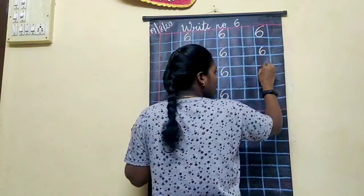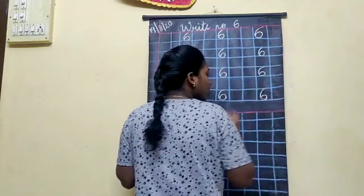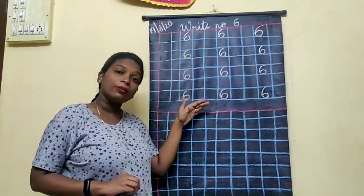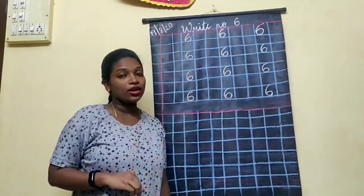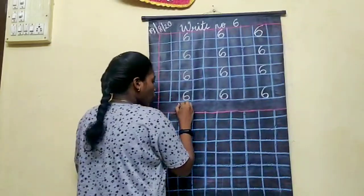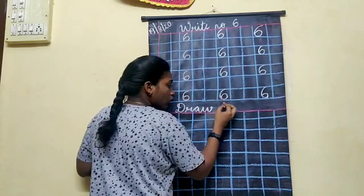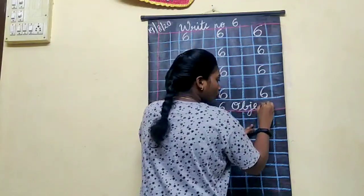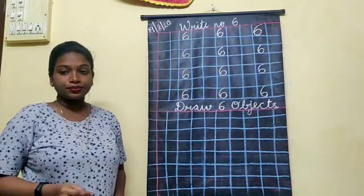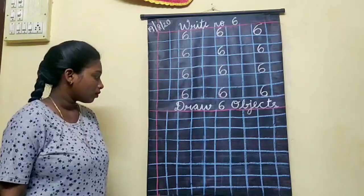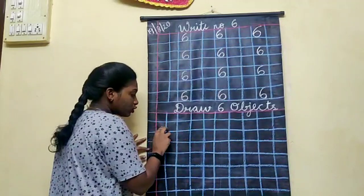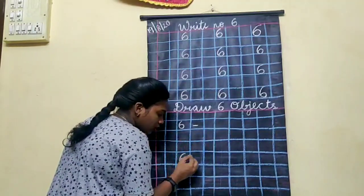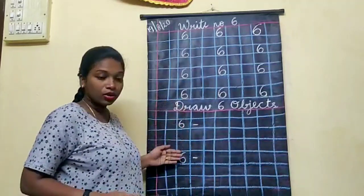Now you will write on the next page. You have to complete the full page and then write on the next page. Parents, you are going to help them in writing the heading. Draw six objects. You can write number six, leave two boxes, write number six and put a dash. Parents, just write them a question so that they can draw.